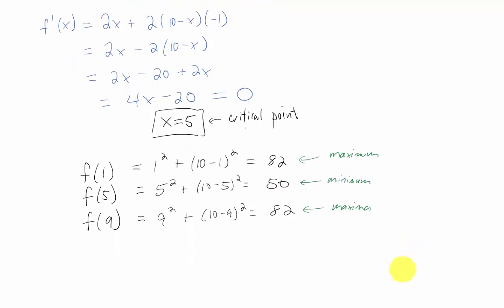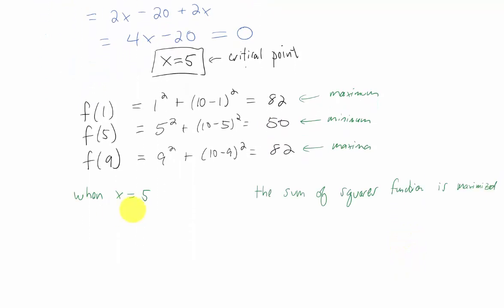So let's take that and summarize the answer. When x equals 5, the sum of squares function is maximized. Because we know that the two integers have to add up to 10, we can include that y is 5 as well. When x is either 1 or x equals 9, the function is minimized. And when x is equal to 1, y would have to be 9. And when x is equal to 9, y would have to equal 1.